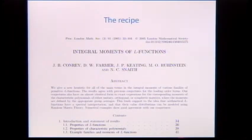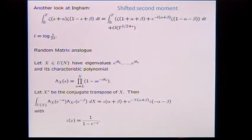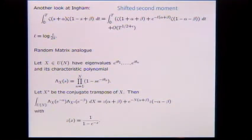We have this paper 'Integral Moments of L-Functions' — it's a recipe for how to conjecture moments in any family, giving all the lower-order terms with what we believe is a power savings. Around the same time, Diaconu, Hoffstein, and Goldfeld by a multiple Dirichlet series approach came up with similar conjectures. We were guided by random matrix theory: for a unitary matrix x with eigenvalues e^{iθ_n}, the characteristic polynomial Λ(x) satisfies exact formulas, and Z(x) = 1/(1−e^{−x}) plays the role of ζ(1+x) while log(T/2π) plays the role of the matrix size N.